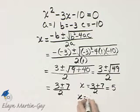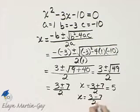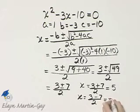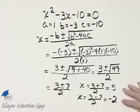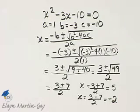x is also equal to 3 minus 7, all over 2. 3 minus 7 is negative 4, and negative 4 divided by 2 is negative 2. Here are our two solutions to the original quadratic equation.